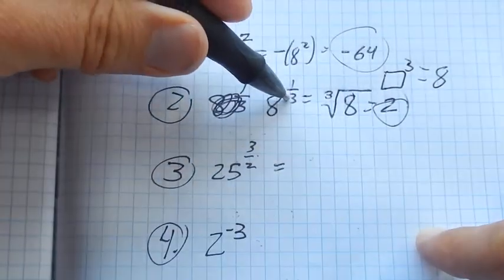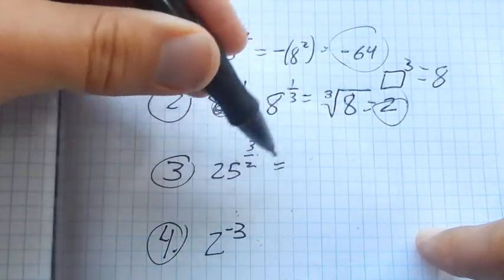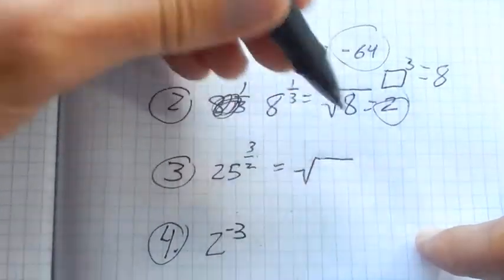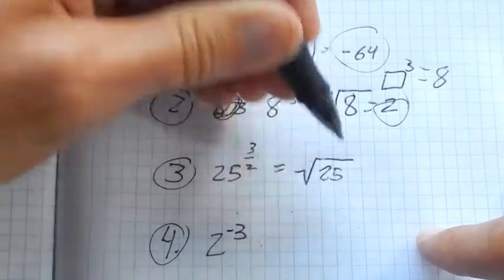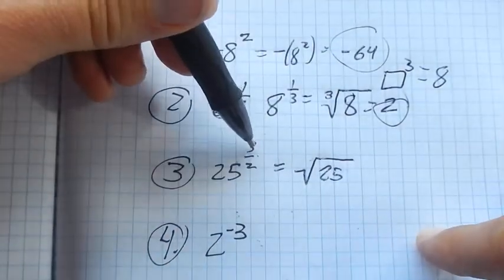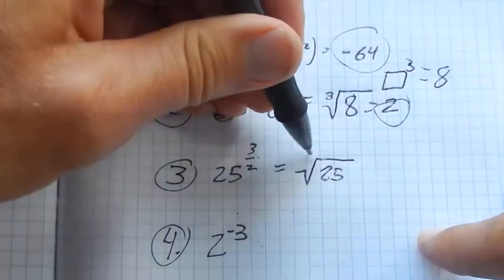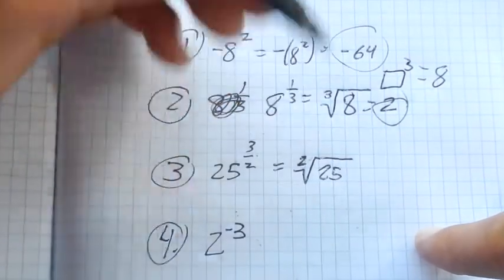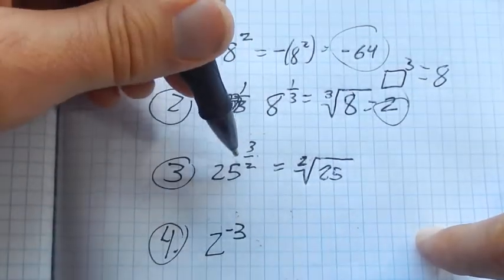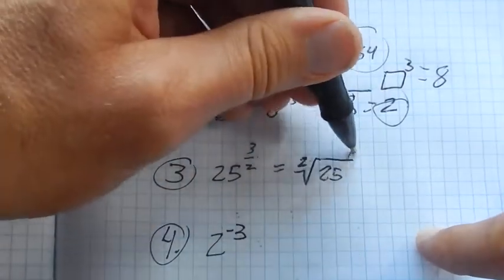25 to the 3/2. So just like this 3 was saying the 3rd root, this 2 is saying the 2nd root or the square root of 25. So if it was just 1/2, that's what it would be. And we usually don't write the 2 here, but I'll just do it just for clarity.